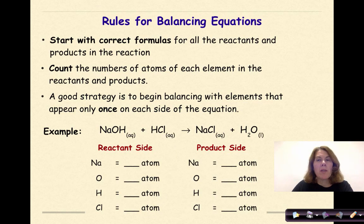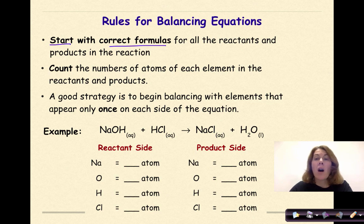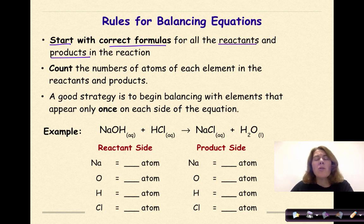Rules for balancing equations. The most important rule is to start with the correct formulas for all the reactants and products in the reaction. If you do not start with the correct formulas, there is no possible way that you are going to be able to balance your chemical reaction — you are going to be stuck. So please start with the correct formulas. I cannot stress that enough.